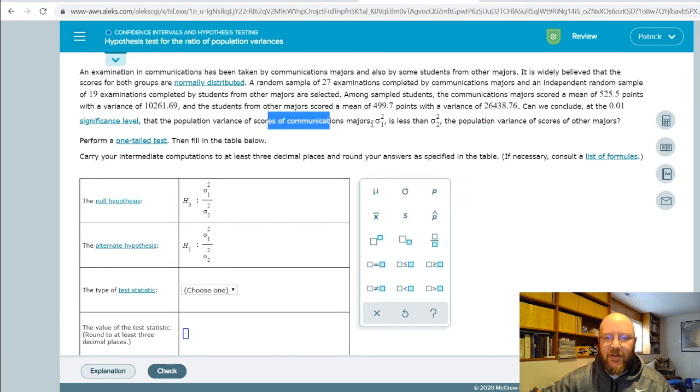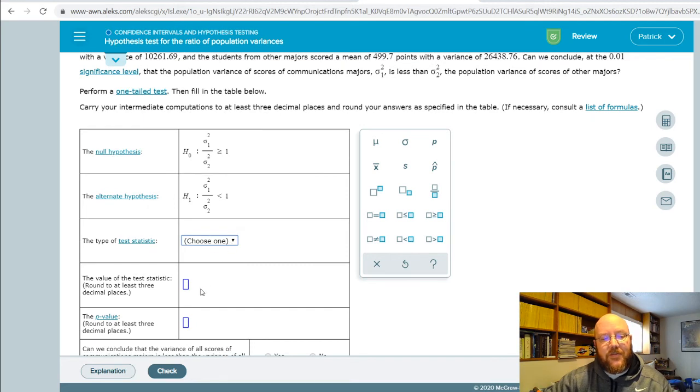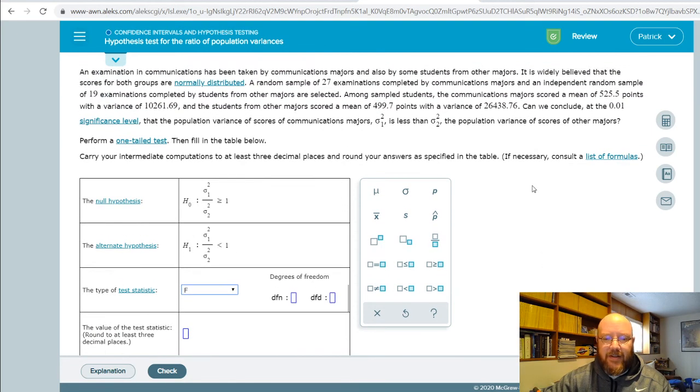Population variance of population one is less than. So this one's gonna be less than one and this one's gonna be greater than or equal to one. This one we're gonna have to look at the other side of the F distribution, be very careful with that one.